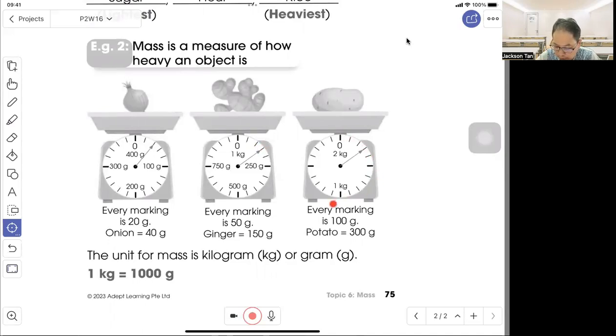From 0 all the way to 1 kg, 1 kg is 1000 grams. Every marking will be 100, 200, 300. So potato is 300 grams.